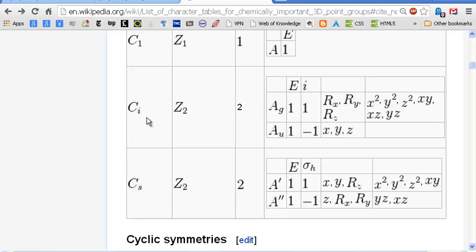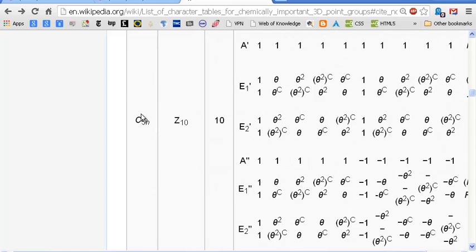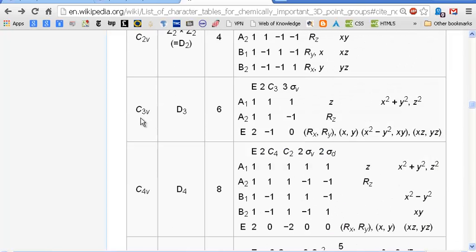So there is no degeneracy possible for a molecule that exhibits the CI symmetry. Let's go down here to, say, C3V. C3V, if we go down the E column here, this identity, we have 1, 1, and 2.